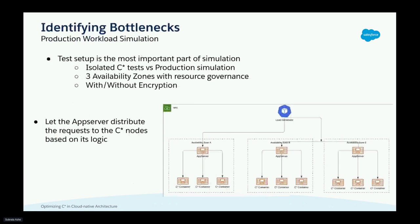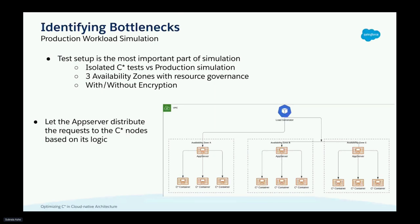Production workload simulation is an important part of finding bottlenecks. It can be done using isolated Cassandra tests or by utilizing the existing application logic used in production. Based on experience, performance issues detected using isolated tests may not always be a problem in a distributed system. That's why we preferred production simulations to uncover major bottlenecks and then go for isolated tests for fine-tuning. We use proper resource governance models and our load generators are allowed to distribute requests through the app servers instead of directly hitting the Cassandra nodes.